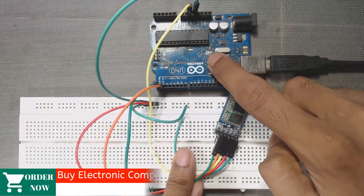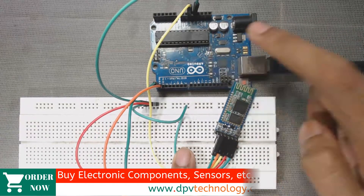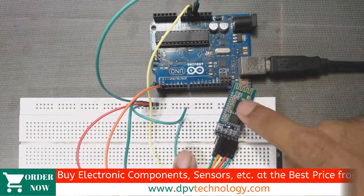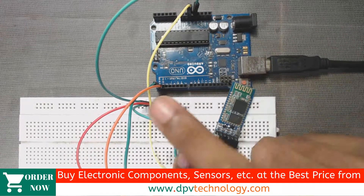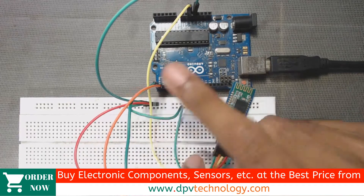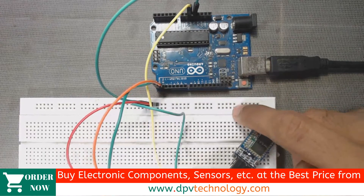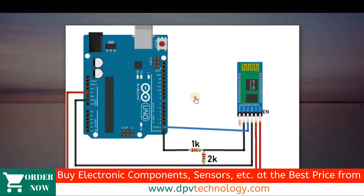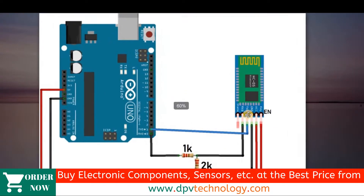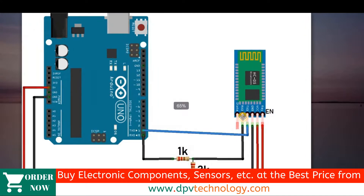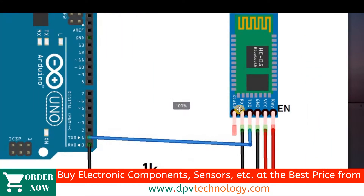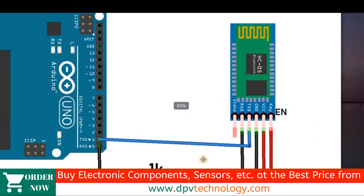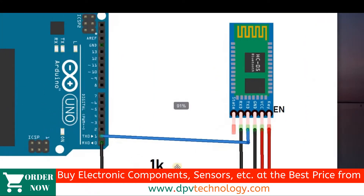For this we need an Arduino, a Bluetooth module, some connecting wires, and a breadboard. Here is our connection diagram. We have to connect the RX pin of the Bluetooth module to the RX pin of the Arduino.